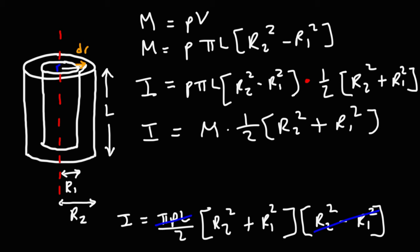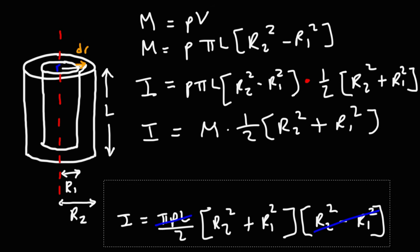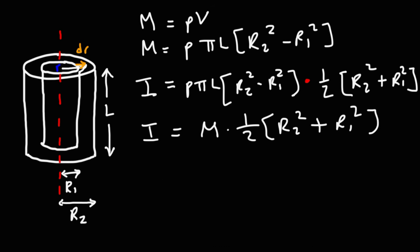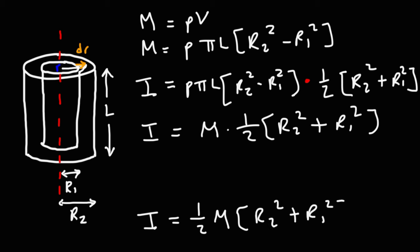Switching M and 1 half to make it look better, we get our formula. The moment of inertia for a hollow cylinder is 1 half M times (r2 squared plus r1 squared). That's how you can derive the formula for the inertia of a hollow cylinder.